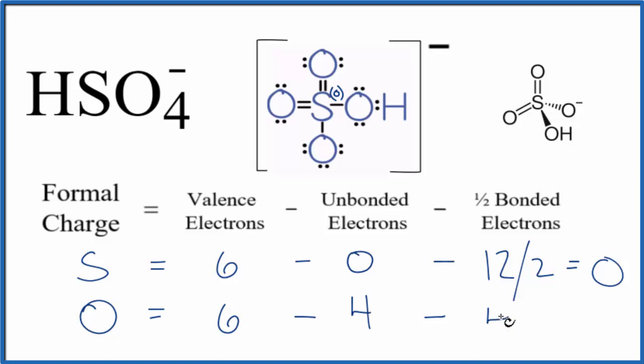That has four in it, and we'll divide that by two. Six minus four is two minus two—that's zero for each one of these oxygens. So let's put a zero here.